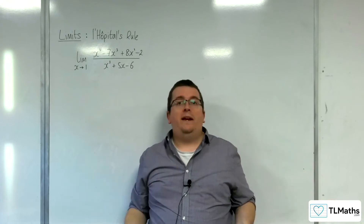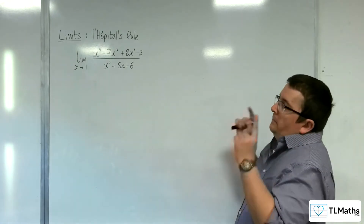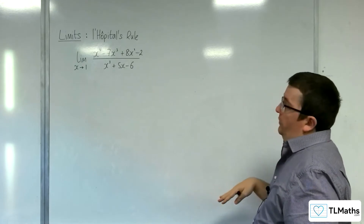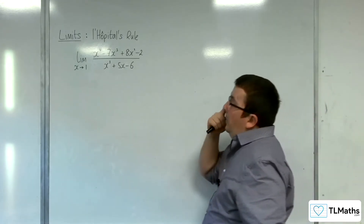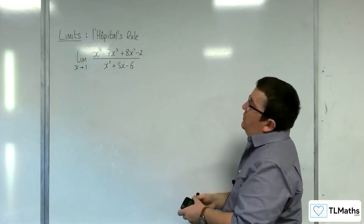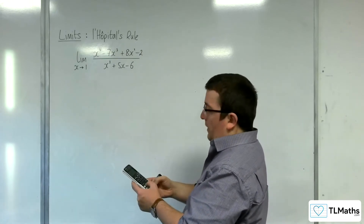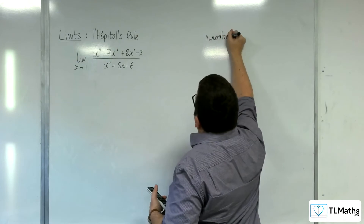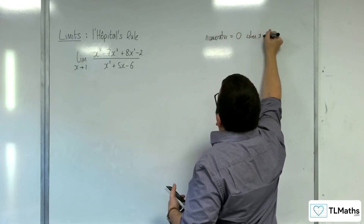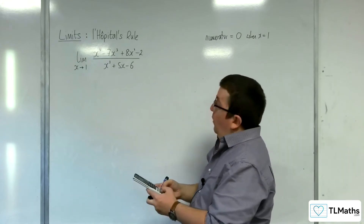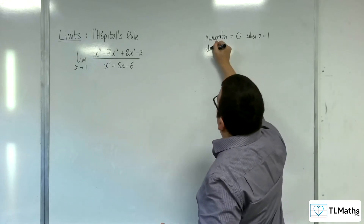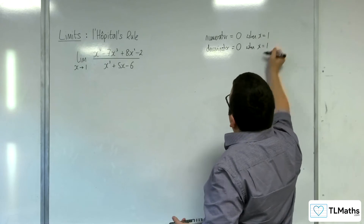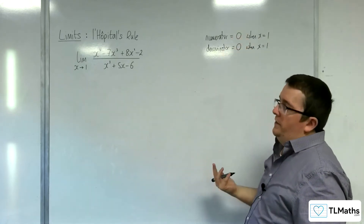Initially, that may not look too problematic, but this is how you can determine whether L'Hôpital's rule should be applied: if I substitute x equals 1 into the numerator, we get 1 take away 7 plus 8 take away 2, which is 0. So the numerator equals 0 when x equals 1. And if I substitute 1 into the denominator, we get 1 plus 5 take away 6, which is also 0. So you have 0 divided by 0 as x tends to 1.